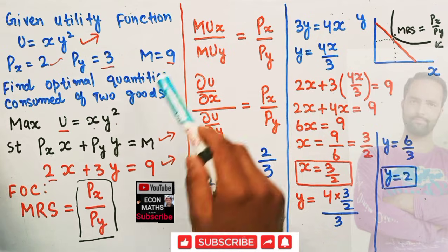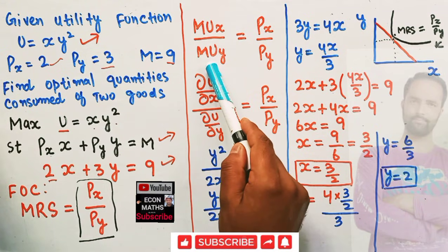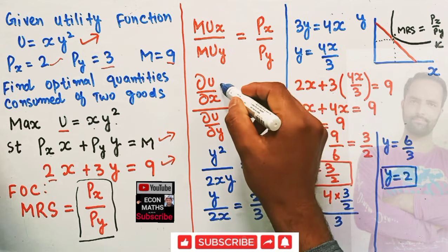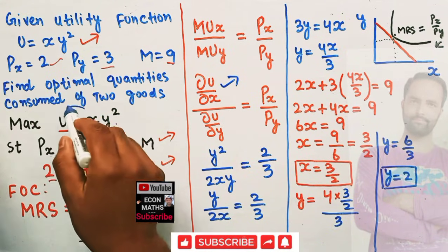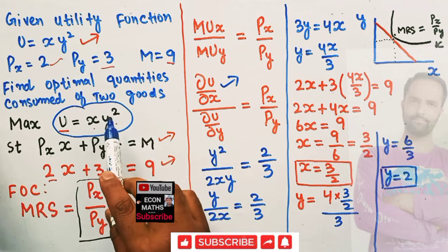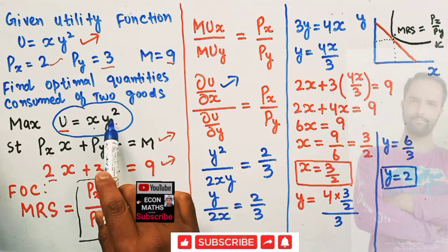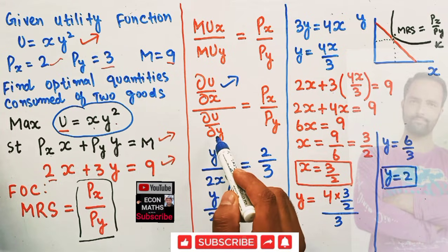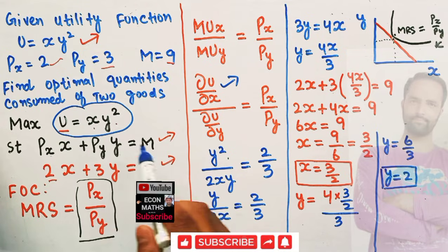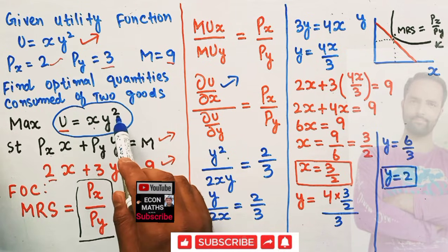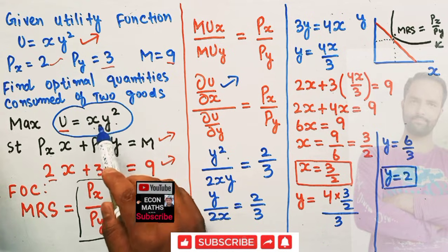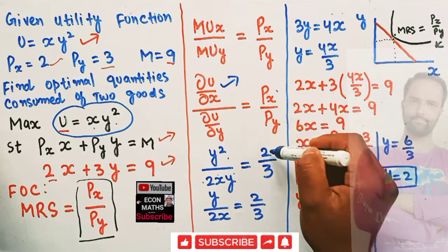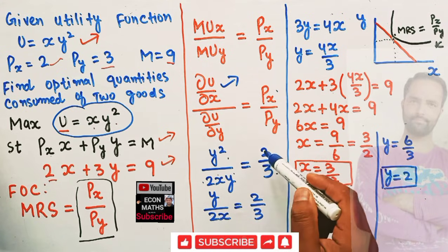The MRS equals marginal utility of good x divided by marginal utility of good y, and this should equal the price of x divided by price of y. Marginal utility of good x is the partial derivative of the utility function with respect to x: the derivative of xy² with respect to x gives y². Similarly, the marginal utility of good y is the partial derivative with respect to y: the derivative of y² is 2y, giving 2xy. So we have y²/2xy = 2/3.